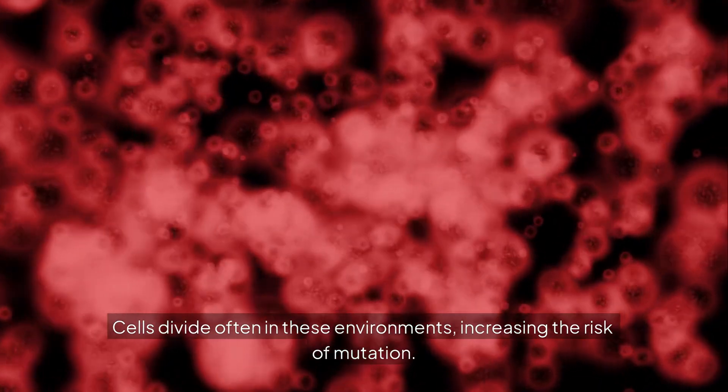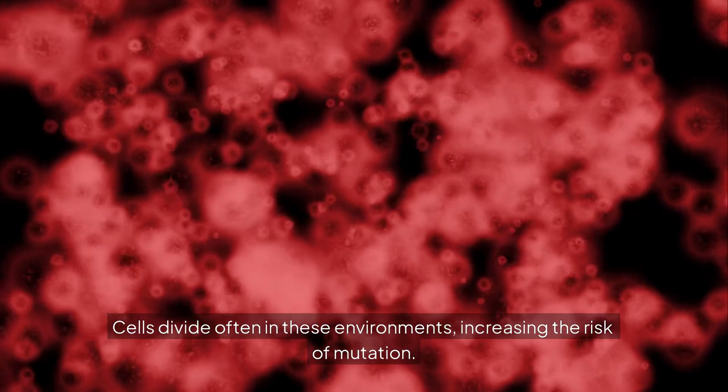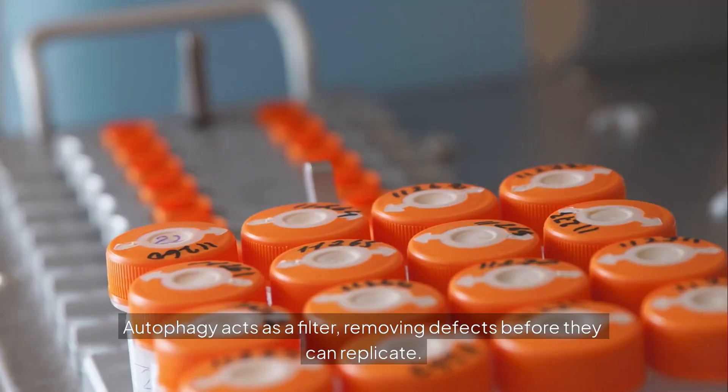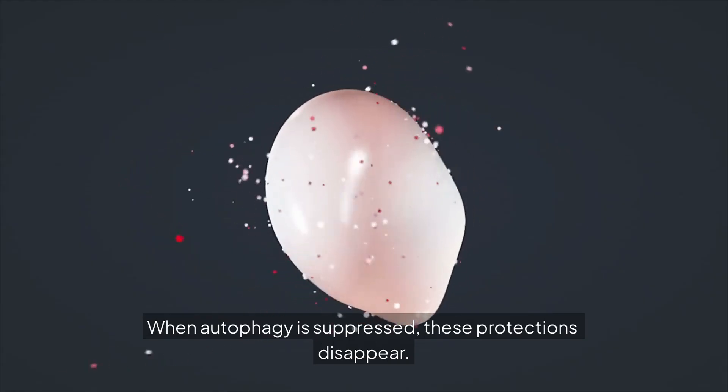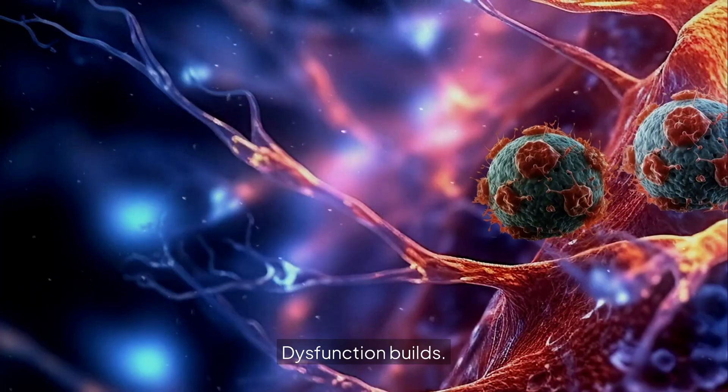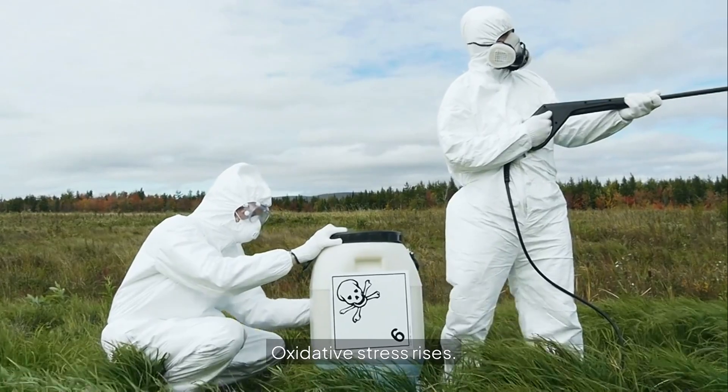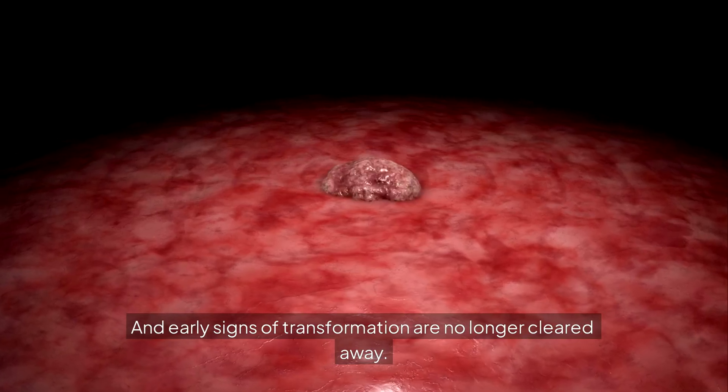Cells divide often in these environments, increasing the risk of mutation. Autophagy acts as a filter, removing defects before they can replicate. When autophagy is suppressed, these protections disappear. Dysfunction builds. Oxidative stress rises, and early signs of transformation are no longer cleared away.